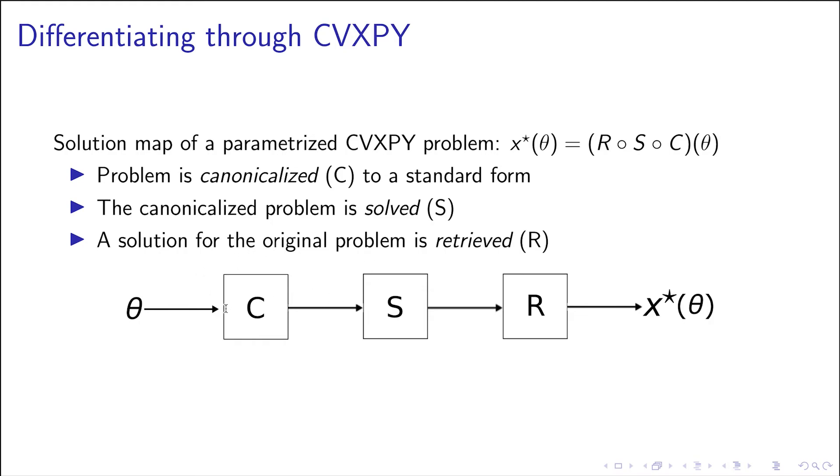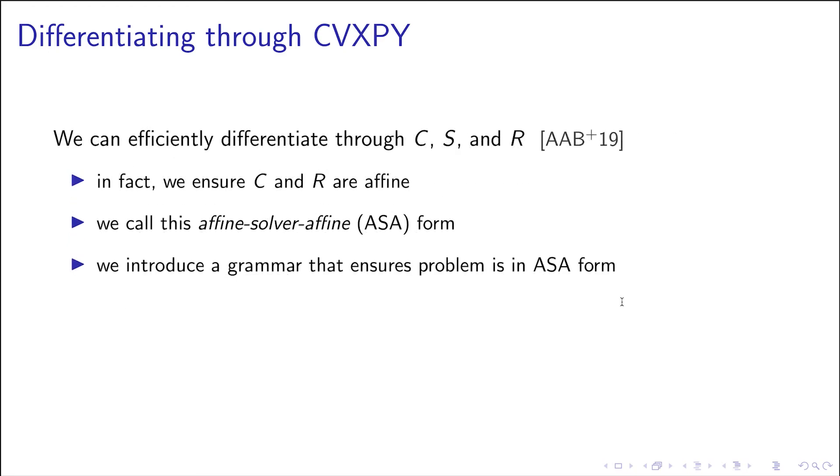Then the solver, which is generic, it's more or less the same for all problems. And then a retrieval stage, which maps from the solver solution to the solution in the original space of the problem. And we can do this very efficiently by ensuring that c and r are affine.